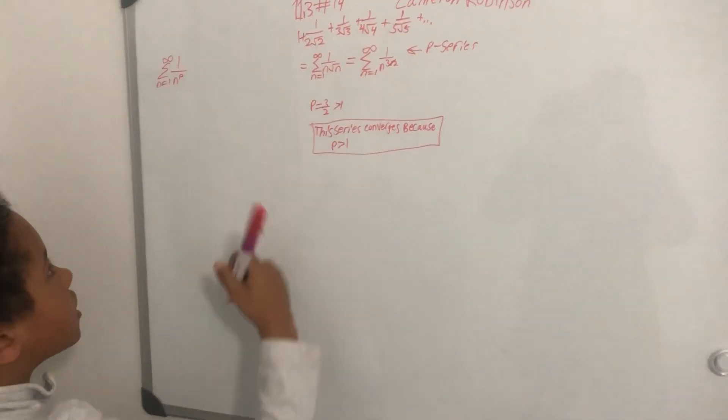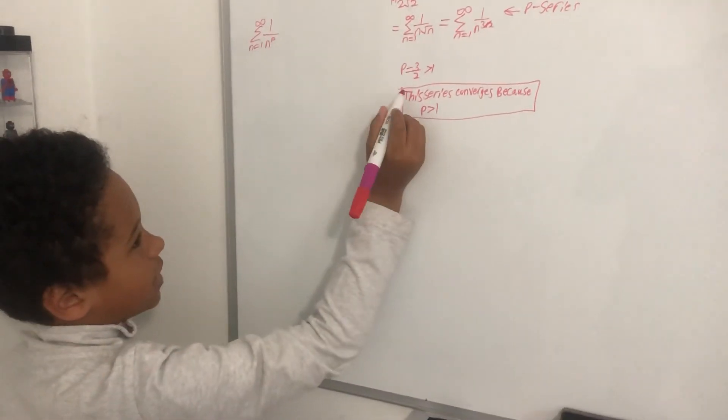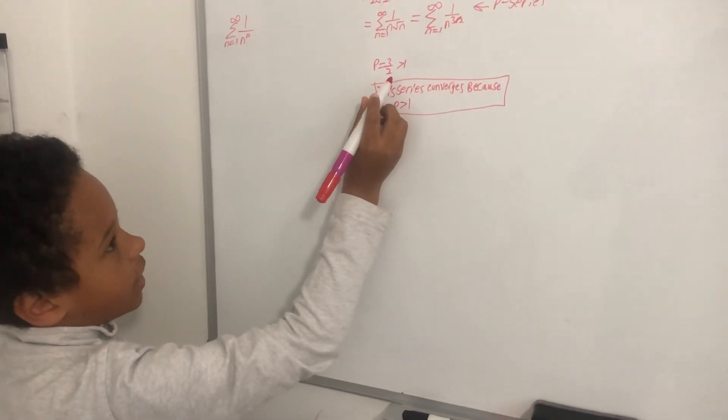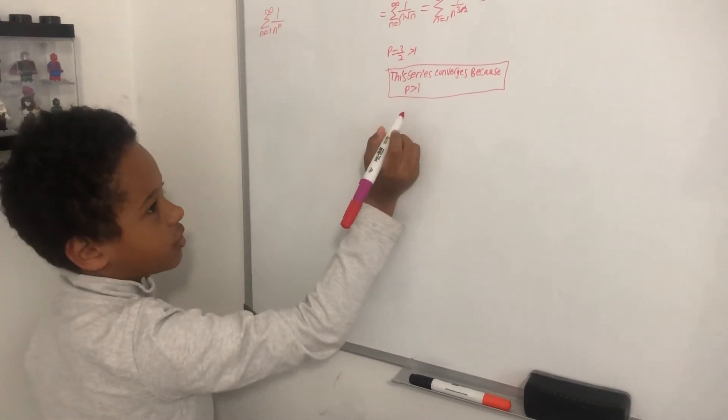Right here, our p is 3 halves. In this case, p is 3 halves and we know it converges if it's greater than 1.